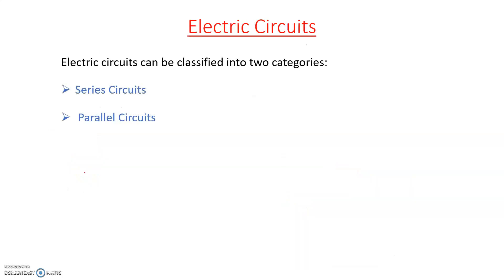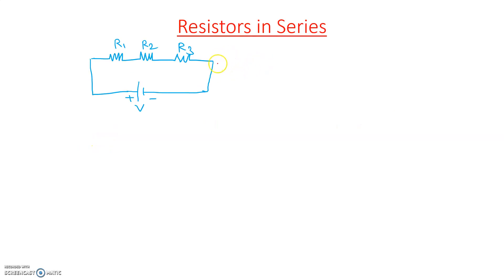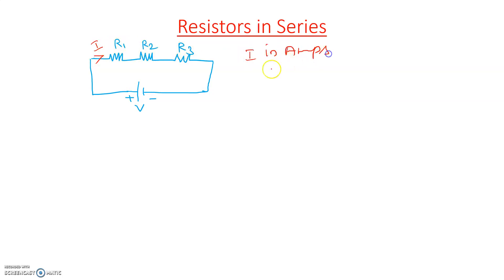Electric circuits can be classified into two categories: series circuits and parallel circuits. For resistors in series, if you take three resistors R1, R2, R3 connected across a DC source in an end-to-end connection, the current through each resistor will be the same — that is, current through R1, R2, and R3 is the same value I in amperes.